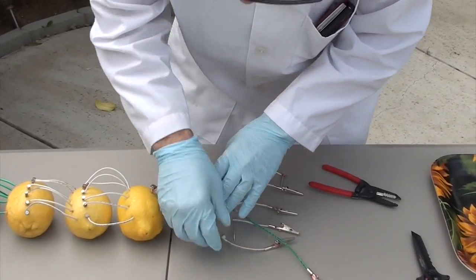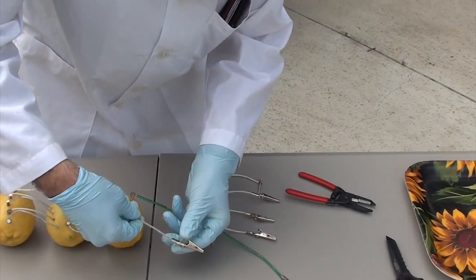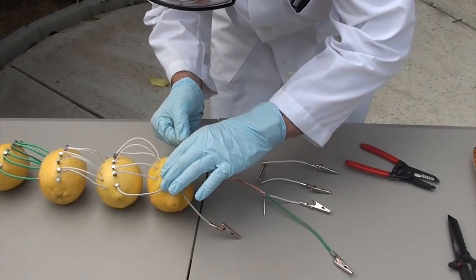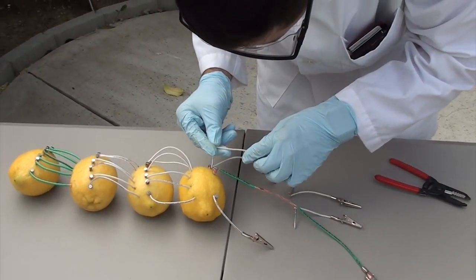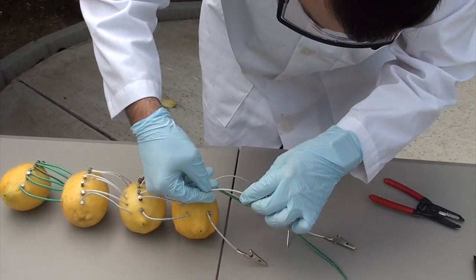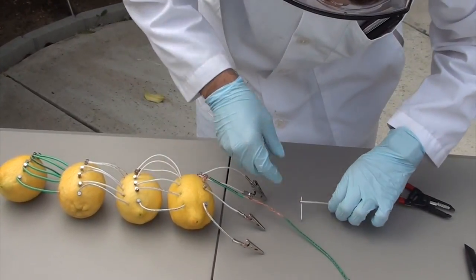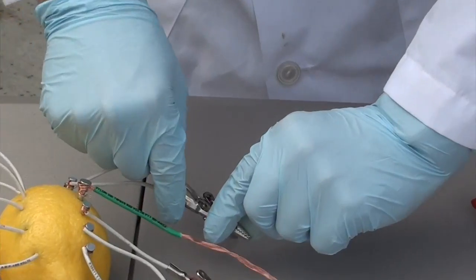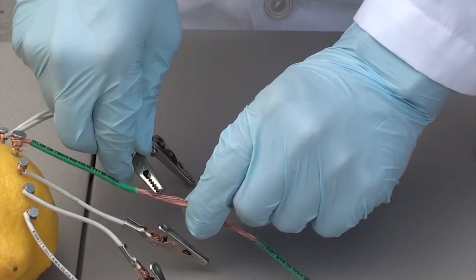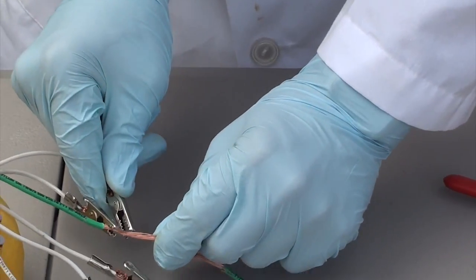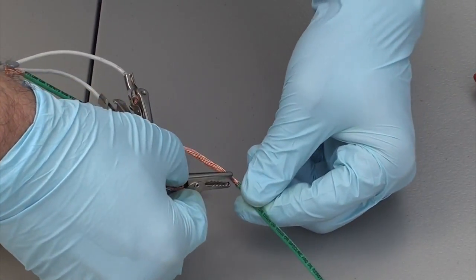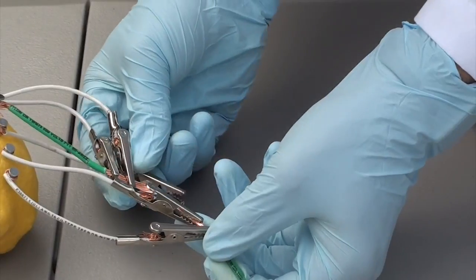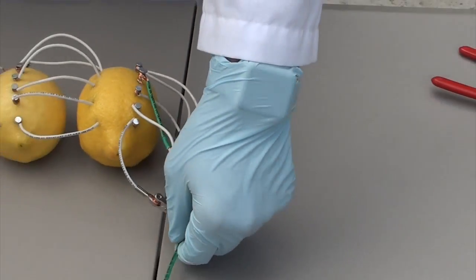We are going to insert this into the lemon and we are going to have the rest of them go next to it. Now all of these are going to connect to that one wire to produce all a negative charge. And that is our negative charge.